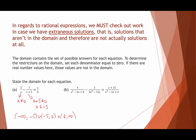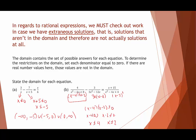Either way is fine — we're looking at the values that x is not allowed to be. For example B, the first denominator factors to x minus 4 times x minus 2, so x cannot be 4 and x cannot be 2. The next denominator is 3x times x minus 4; x minus 4 is already accounted for, but 3x adds the restriction that x cannot be 0.